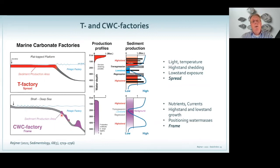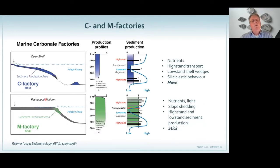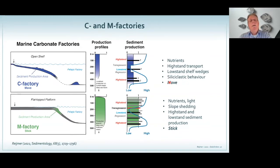Going to the cool water factory, you see very localized production areas but over very large depth ranges — they can go up to two to two-and-a-half thousand meters and still produce carbonates, because they depend on nutrients and currents that bring the nutrients. They have variations in high- and low-stand growth depending on how much food they get — it's the positioning of the water masses. They produce their own skeleton and their own mounds — that's why I use the term 'frame.' The C and M factories have different morphologies, different production profiles, and different sediment production through time.